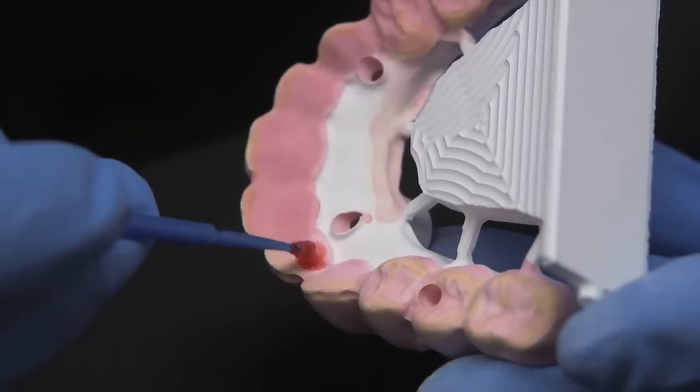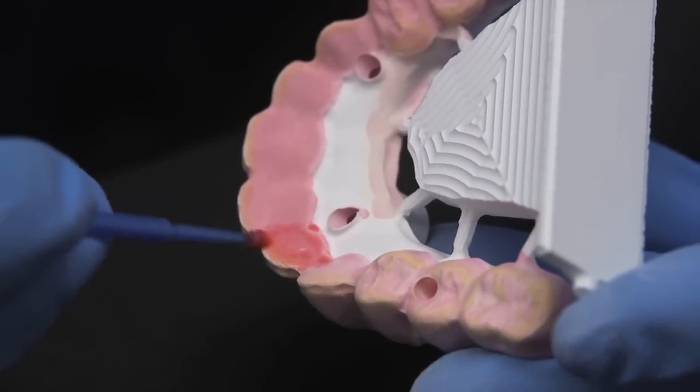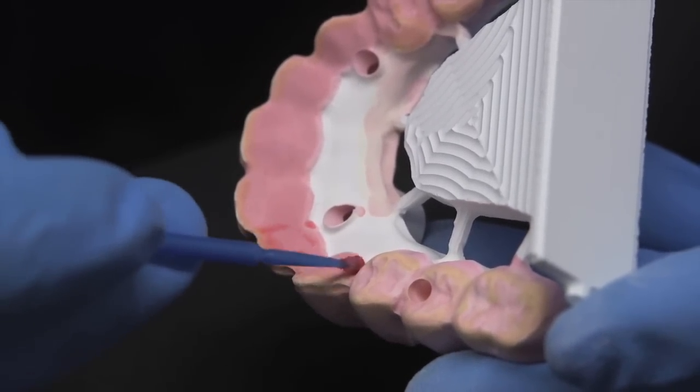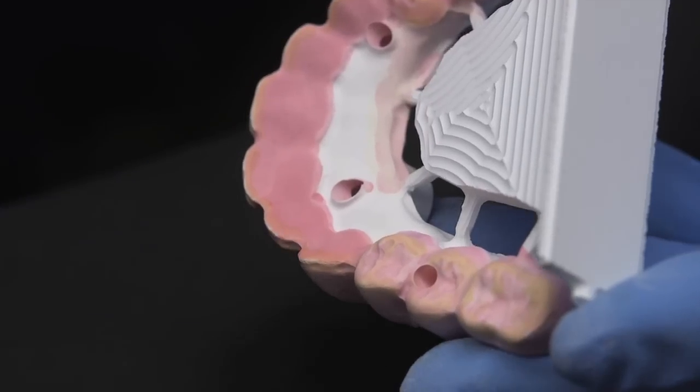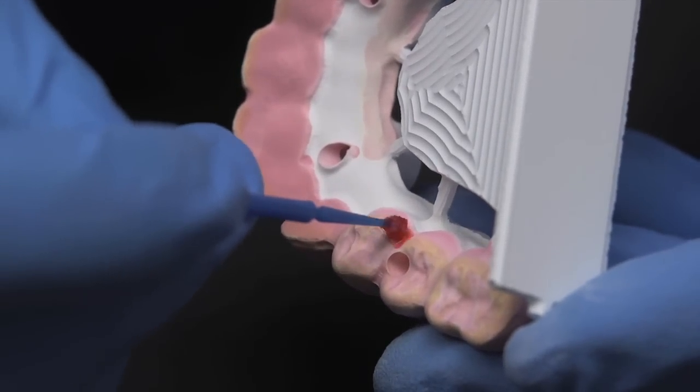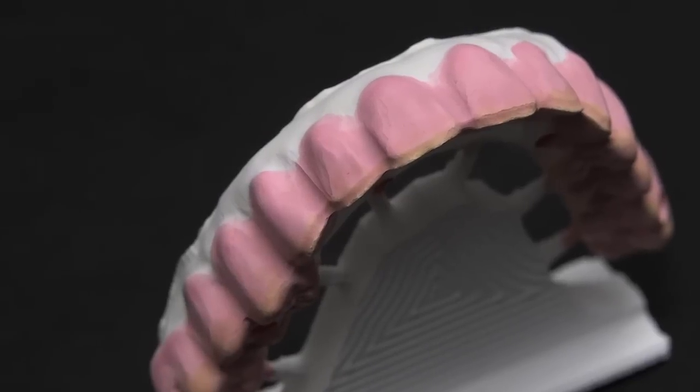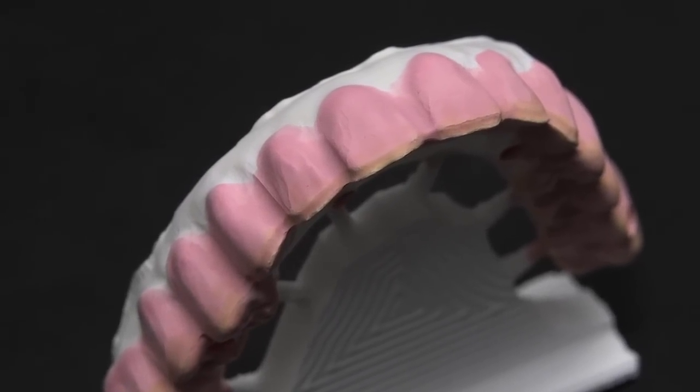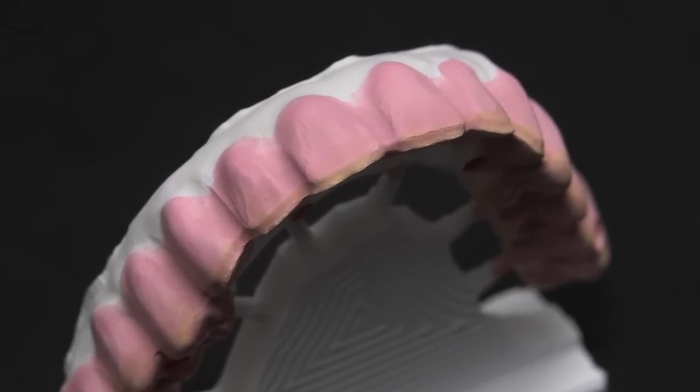You may have noticed the support bars that are attached to the lingual of the bridge. These bars prevent the bridge from warping during the sintering process. When sintering, we recommend running only two bridges per cycle to ensure the furnace is heating consistently.